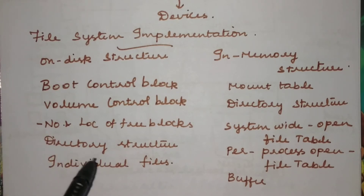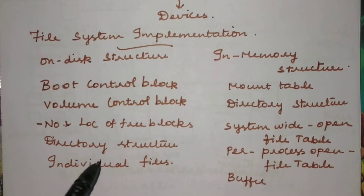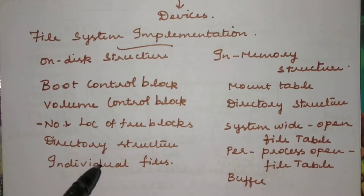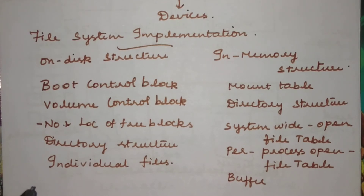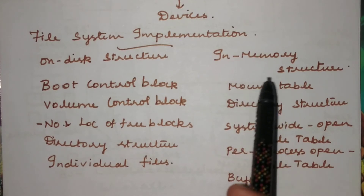The directory structure is created for each file we create. That information is stored in the directory structure, which gives the organization and structuring of the file system. The next component is individual files — all related information about each file is stored in the FCB, the File Control Block. The FCB includes information about protection, accessibility, ownership, file attributes and properties, and other details.